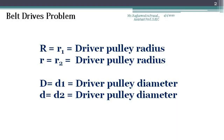Before solving the problem, I would like to tell about notations used in the derivations and problems. Radius of driver pulley and radius of driven pulley are represented as capital letter R and small letter R respectively in derivation. They can be replaced with R1 and R2 also while solving the problems.